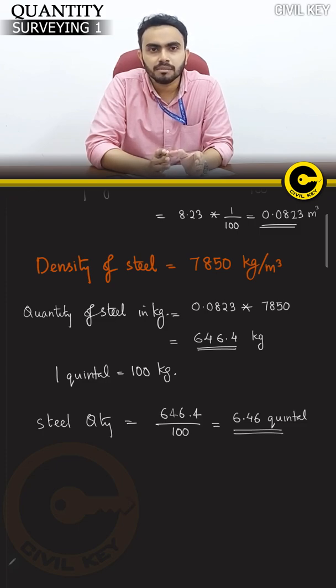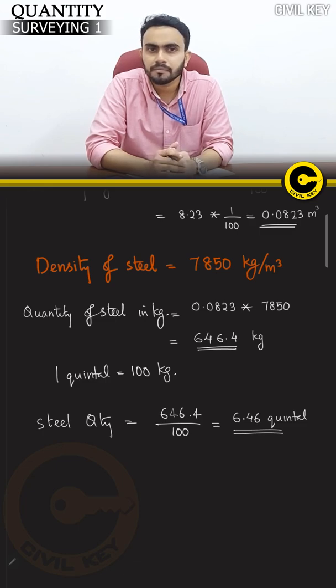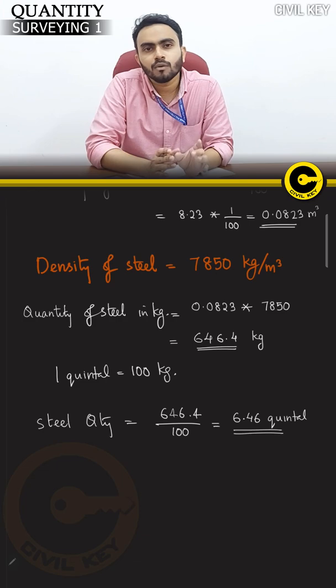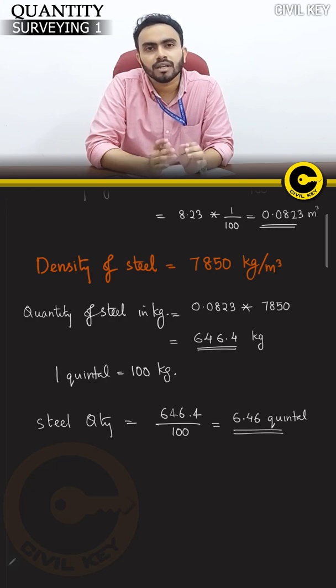The third point is we use steel. The steel quantity is given in m³, and then we convert it to the appropriate weight unit using the standard density.